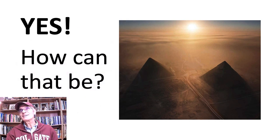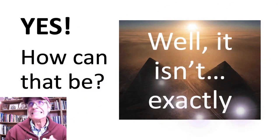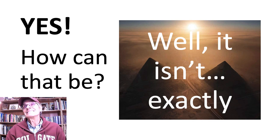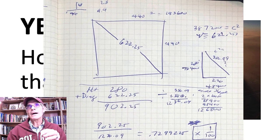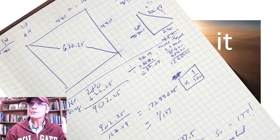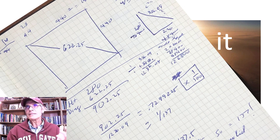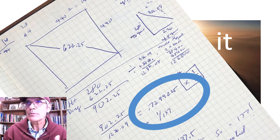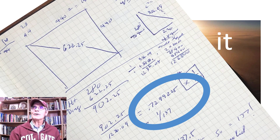Actually, it isn't exactly. I checked Alan's math, and just dividing those different lines in the Great Pyramid like he said, I came up with 0.729, as you can see there.